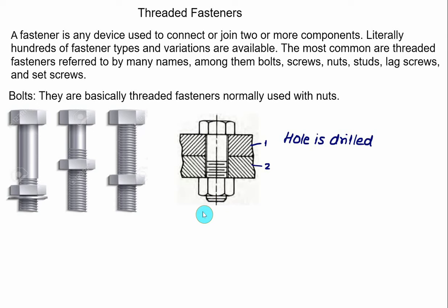The basic purpose of the bolt is to clamp two or more parts together. The clamping load stretches or elongates the bolt, and the load is obtained by twisting the nut until the bolt has elongated almost to the elastic limit. Normally while tightening, you have to hold the bolt stationary and twist the nut. In this way, the bolt shank will not fail due to the threaded friction torque. So the technique is: hold the bolt and tighten the nut.